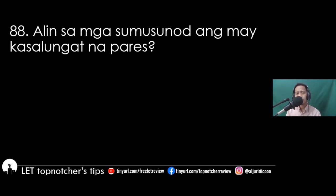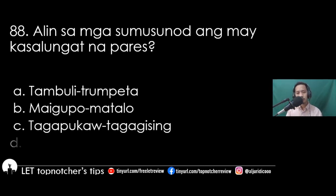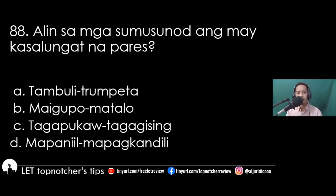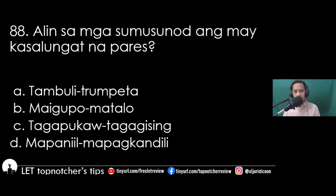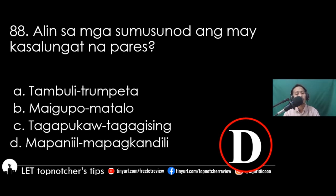Item 88 (Filipino): Alin sa mga sumusunod ang may kasalungat na pares? A) tambuli–trompeta, B) maigupo–matalo, C) tagapukaw–tagagising, D) mapaniil–mapagkandili. Ang tatlo sa mga pagpipilian ay magkasinkahulugan maliban sa titik D, mapaniil o mapagkandili. Ang mapaniil ay nangangahulugang malupit, habang ang mapagkandili ay mapagbigay.